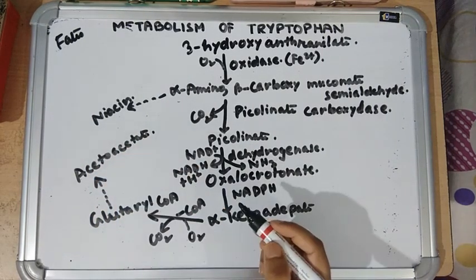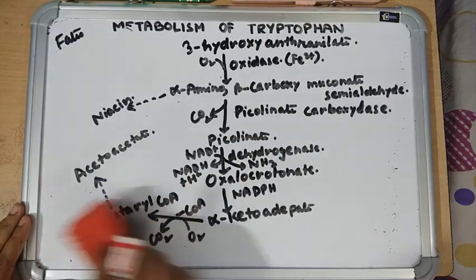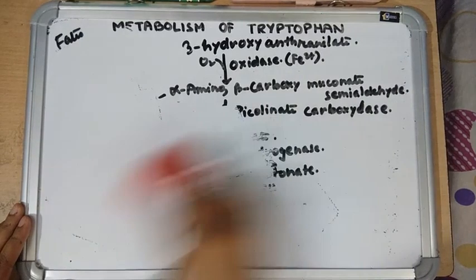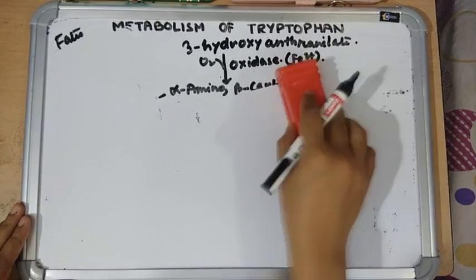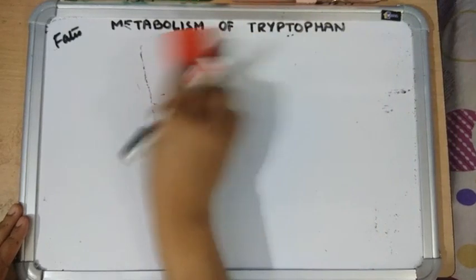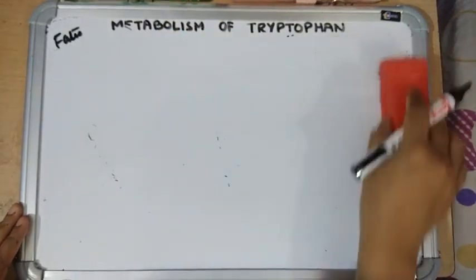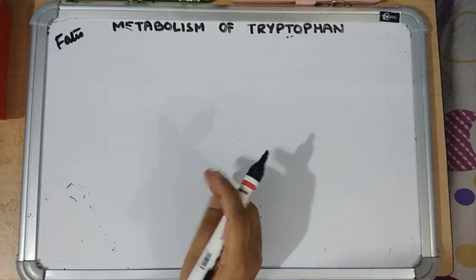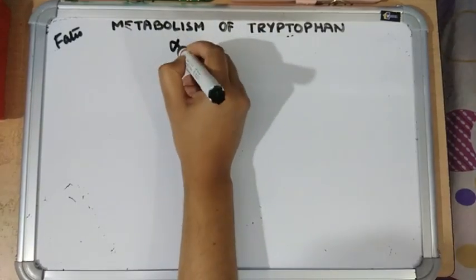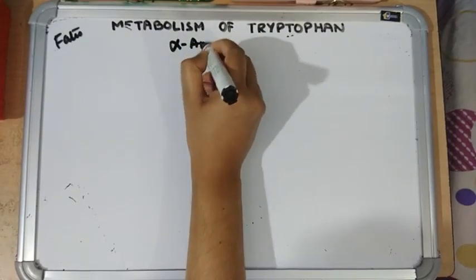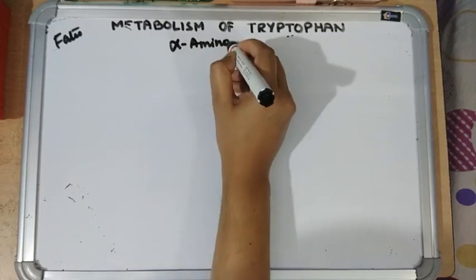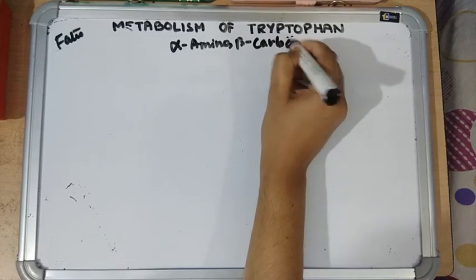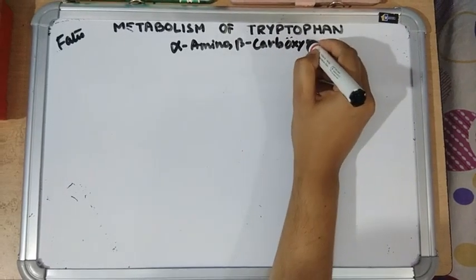Alpha-ketoadipate is converted into glutaryl coenzyme A by oxidative decarboxylation, and glutaryl coenzyme A is converted into acetoacetyl-CoA, thus forming ketone bodies.